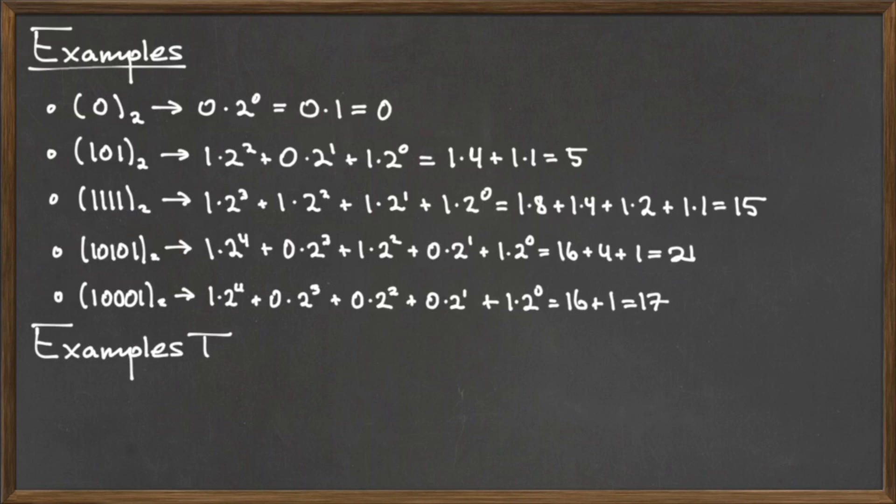For some additional practice, try writing the base 2 numbers 110100 and 101010 in their associated base 10 forms.